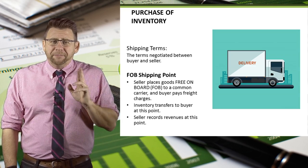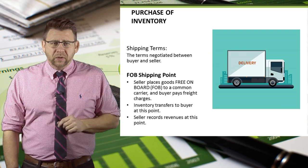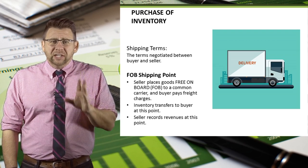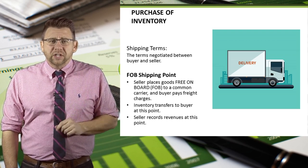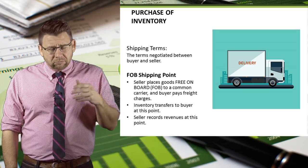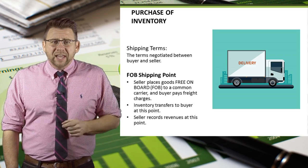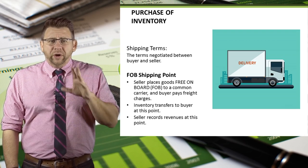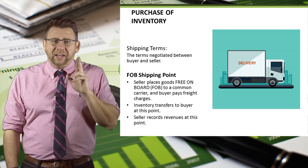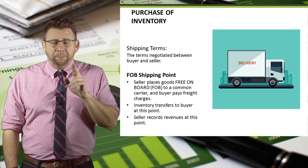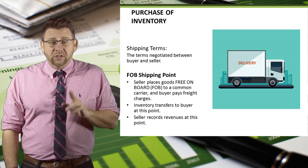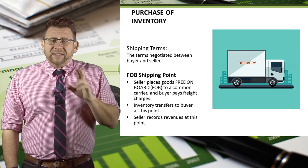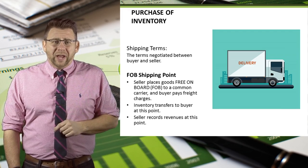FOB means free on board. For FOB shipping point, a seller delivers the goods to a common carrier like UPS or FedEx at the seller's shipping dock. Inventory transfers to the buyer at this point and the buyer pays the freight costs directly to the common carrier. Finally, the seller records the revenue at this point.